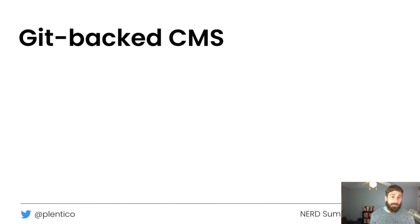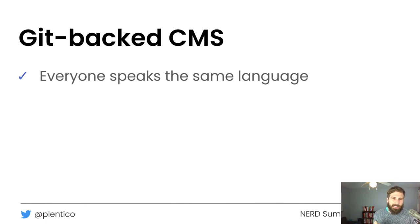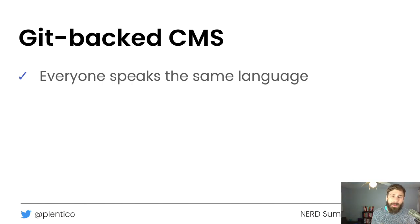An essential part of the Plenty ecosystem is a Git-backed CMS. A Git-backed CMS is this concept where everybody can finally speak the same language. Developers typically use Git, but clients don't understand Git. The way we solve this is with a Git-backed CMS: a developer can deploy and see changes using Git, while a client can edit the site through a web interface that looks like a web form — and that writes back to Git. That way, you can see exactly what's being done, by whom, and when.